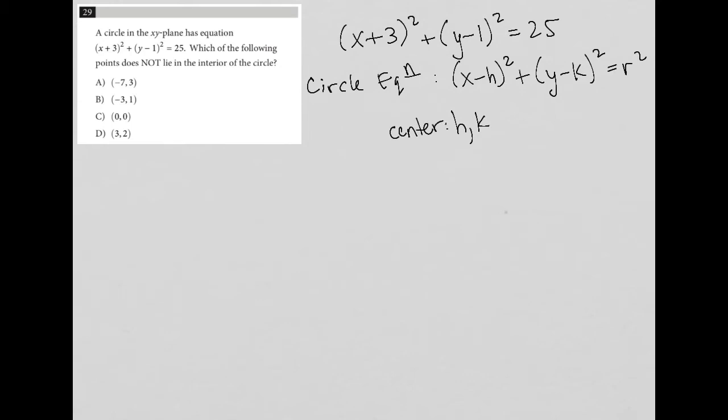And the radius r is equal to 5 because r² is 25 and 5² is 25 so r is 5. So which of the following points does not lie in the interior of the circle?